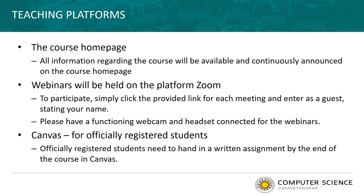The course is provided in two versions. You can take it as a freely available online course to learn about the material and take part in webinars and discussions. If you want to take the course for credit, you need to be an officially registered student, turn in a set of written assignments connected to the course, and also take an oral exam. These written assignments will be administered through the Canvas learning system.